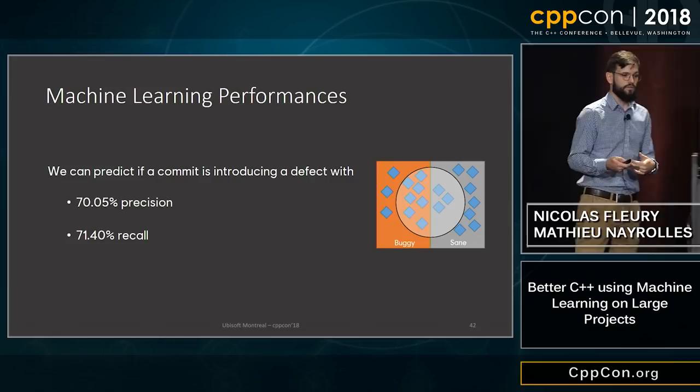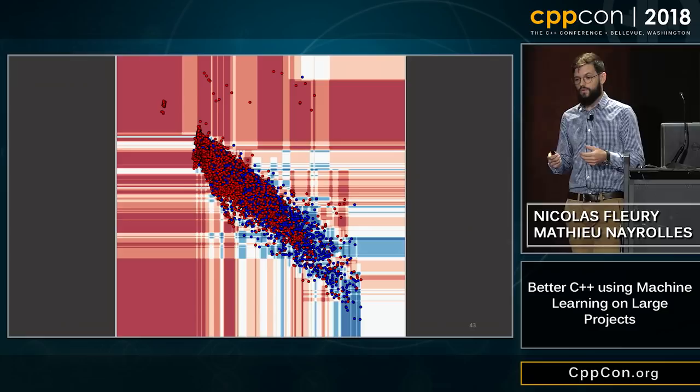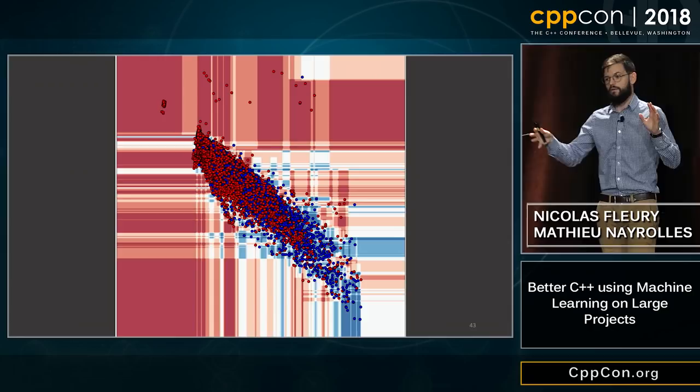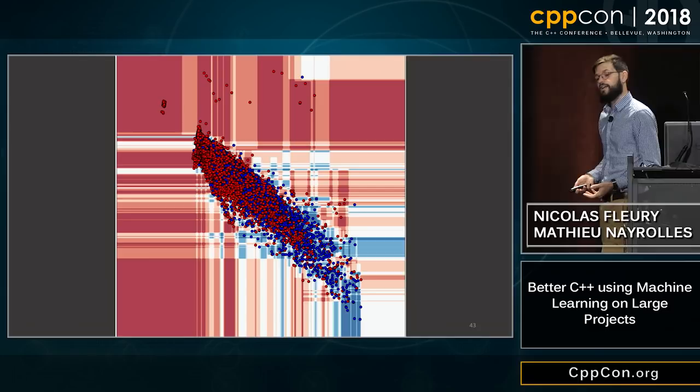Looking at real data from Rainbow Six Siege: in red are buggy commits, in blue are sane commits. One interesting thing about this graph is that the red area modeling buggy commits seems greater than the blue area — and indeed it is. In this 2D flattening of our 40-dimensional matrix, it's much easier to produce a buggy commit than a sane commit, because the classifier shows much more area classified as buggy.